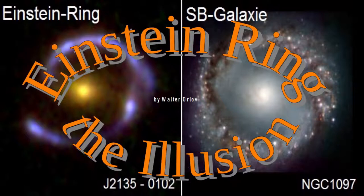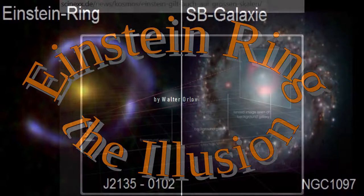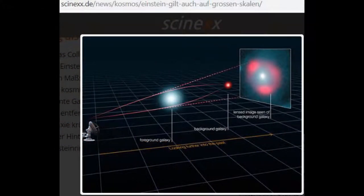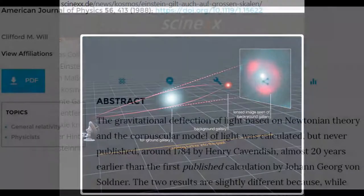Einstein rings are circular appearances caused by the gravitational lens. In the gravitational field of mass-rich objects, light rays are deflected from their straight paths and bundled. Actually, this phenomenon can also be expected in the context of classical mechanics.